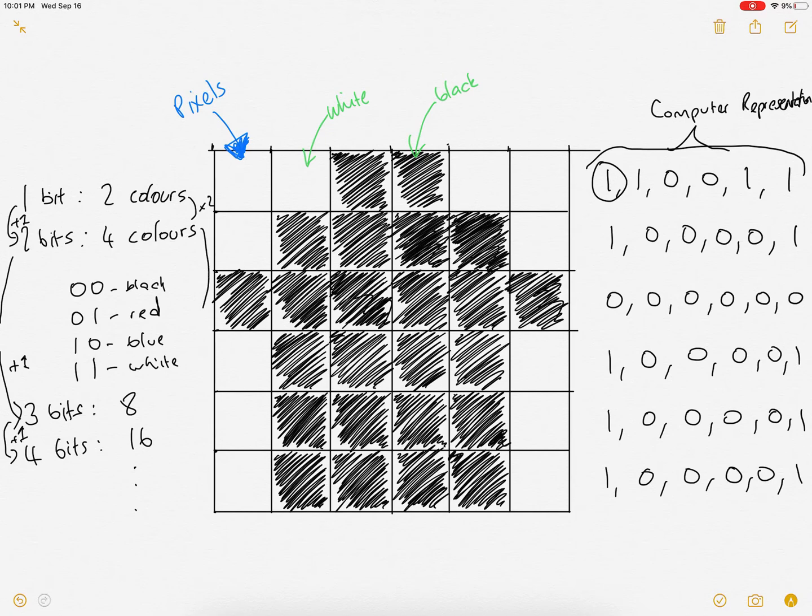So every time that's going up by one, this is doubling. So this is times two, times two, times two. So you should be able to work out how many colors we can represent with five bits, six bits, seven bits, and so on. So that's how bitmap graphics are stored in a computer system.